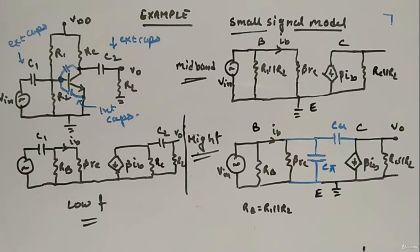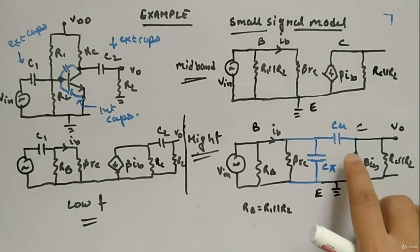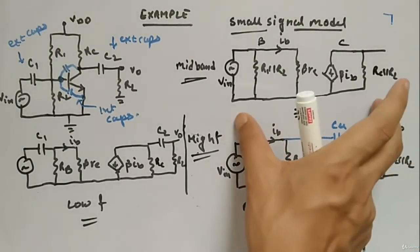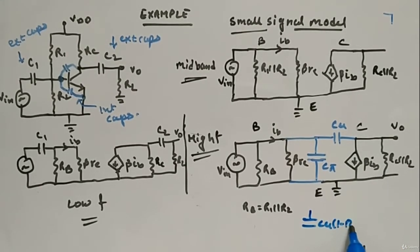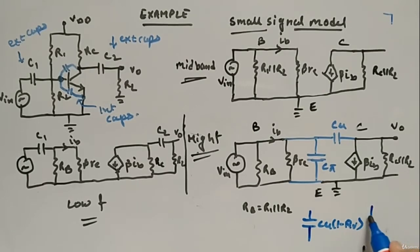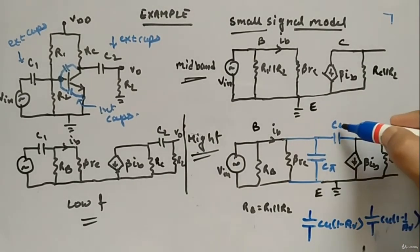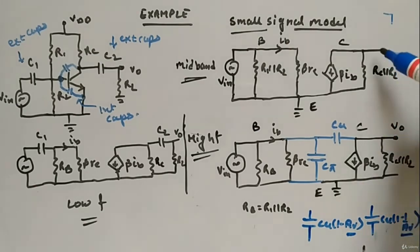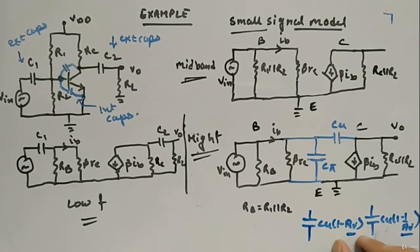One important thing to mention: whenever you apply Miller's effect to Cmu, you need the voltage gain Av. Cmu gets split into Cmu times (1 minus Av) between base and emitter, and Cmu times (1 minus 1/Av) in the other direction. This Av is calculated from the mid-band region — it is the gain without the internal capacitors, i.e., the mid-band analysis gain that you plug into the Miller formula.